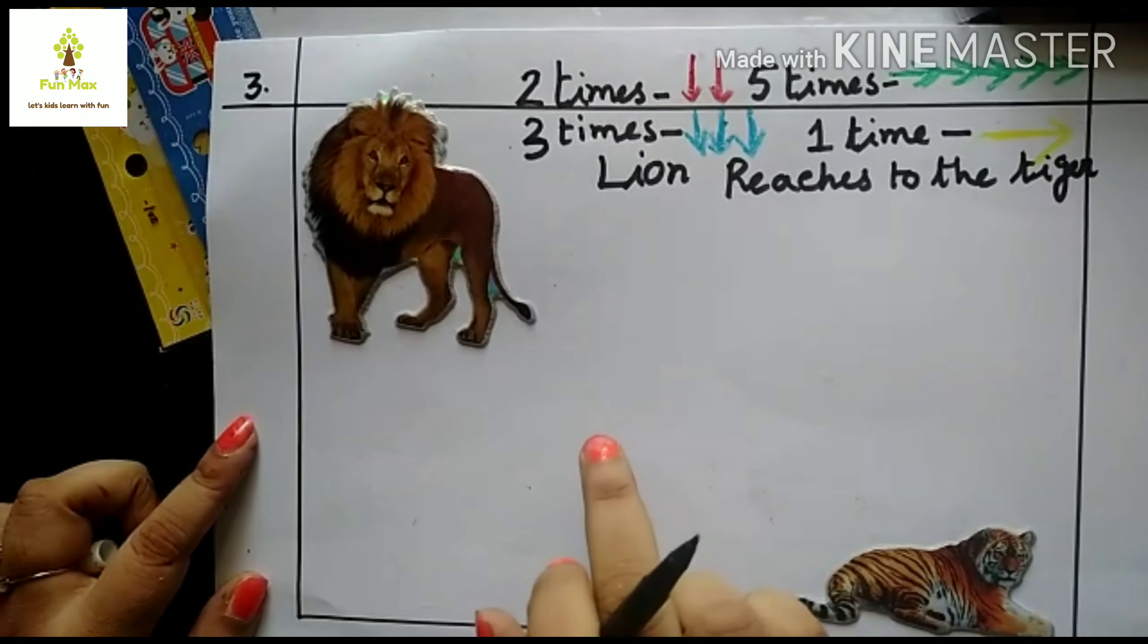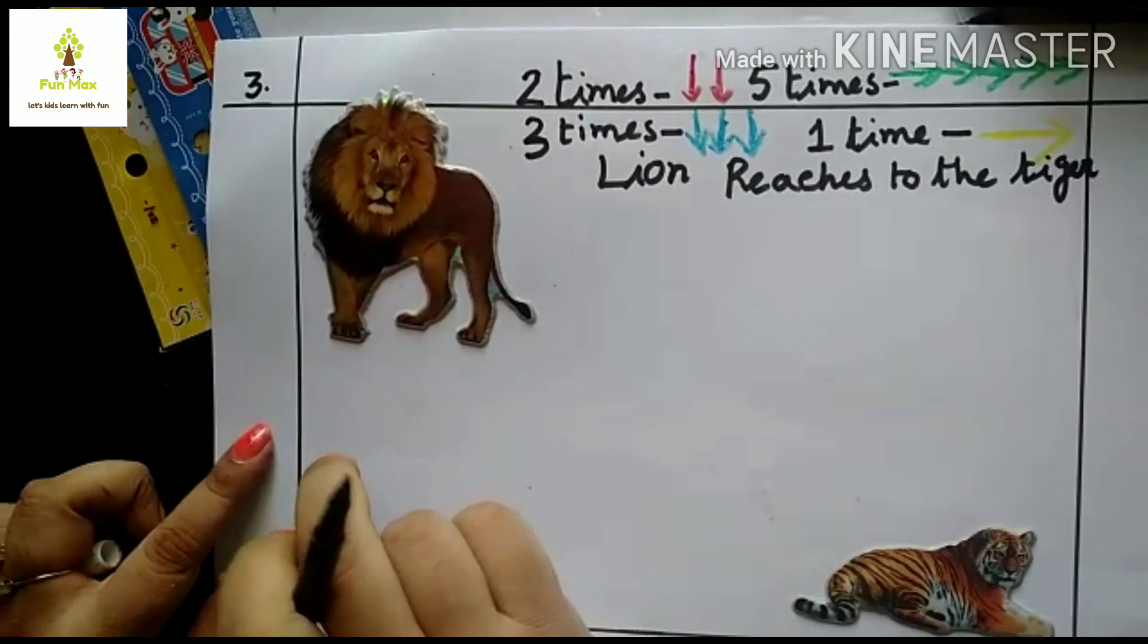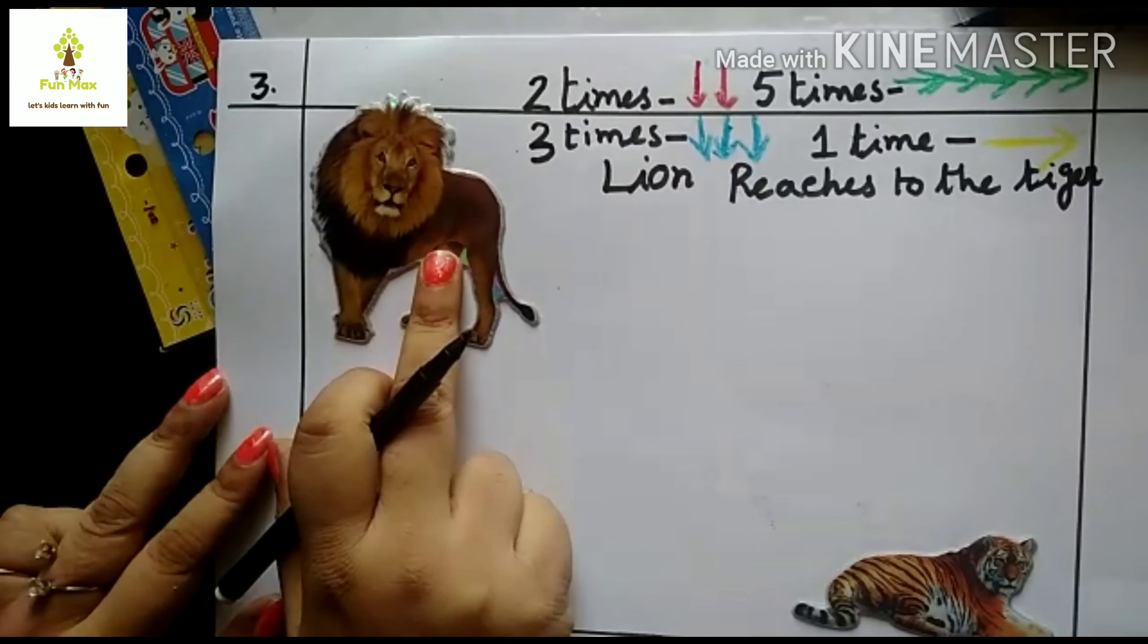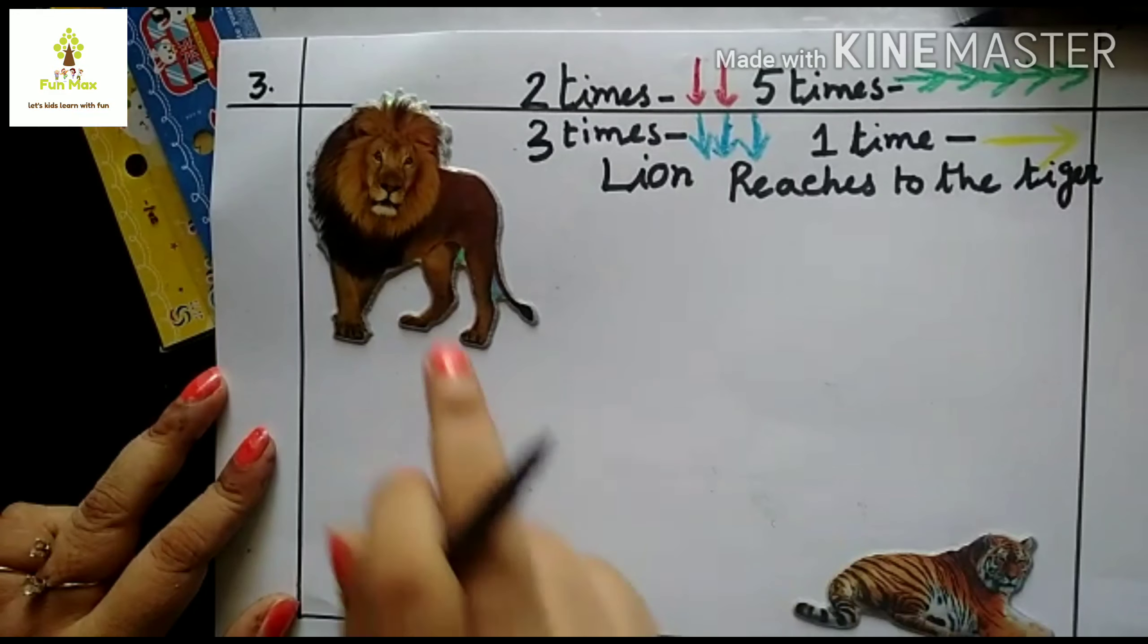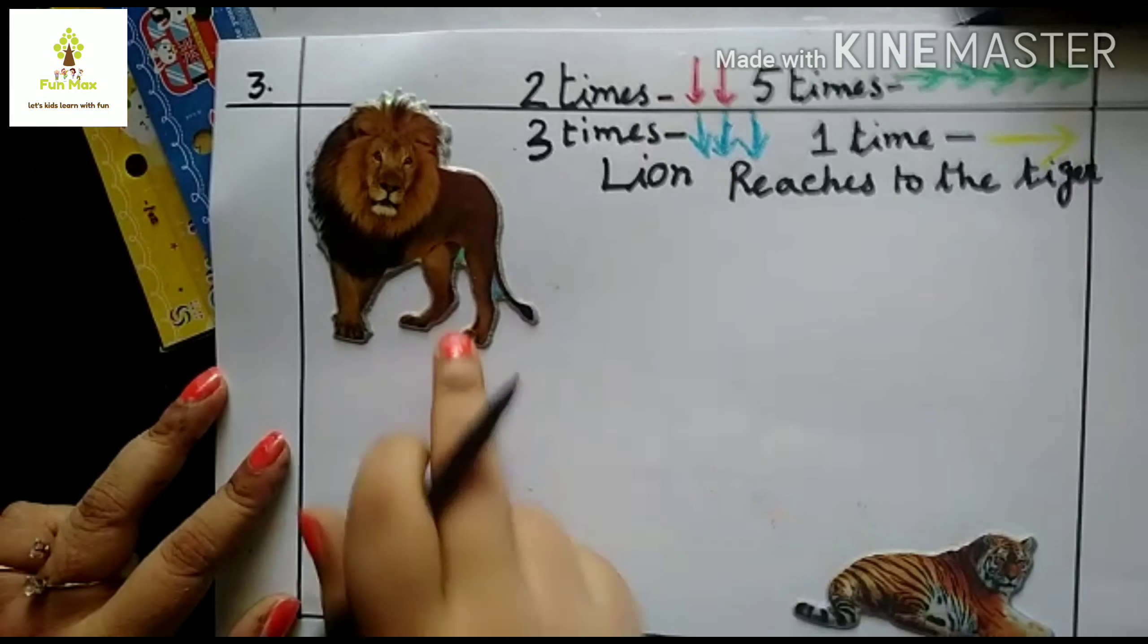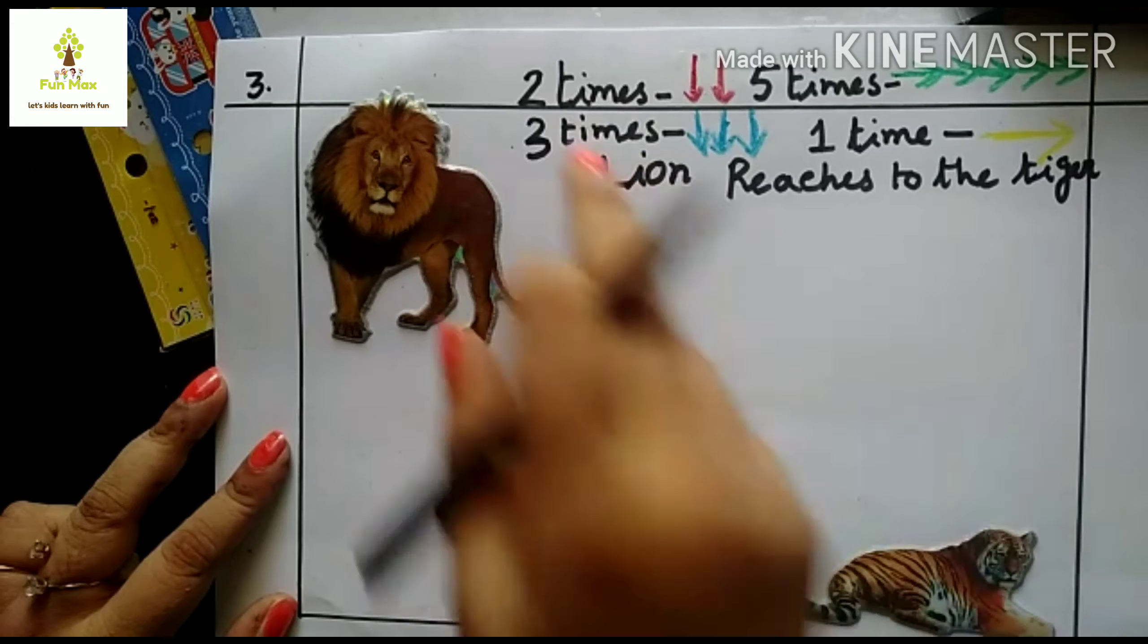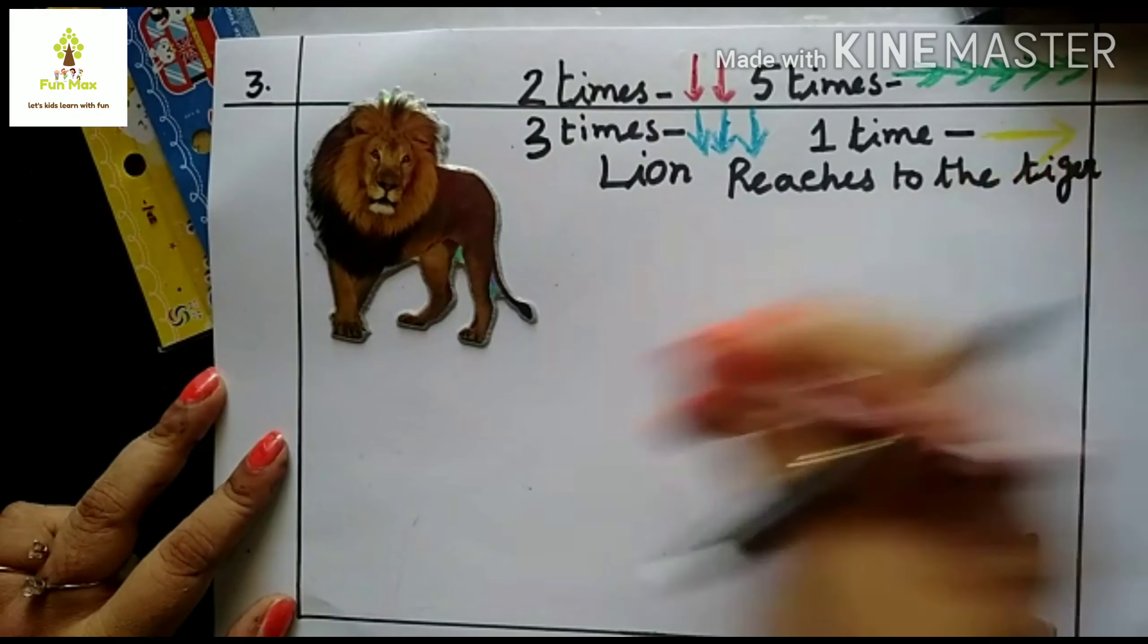Here guys, this is a very much fun activity. Here is a picture of lion and here tiger. Both are the friends. Lion has to reach to the tiger to make a friendship. Kids feel fun to do this. This lion has to friendship with the tiger. How will the lion reach to the tiger? By through particular directions. Here I write down two times red arrow, two times red arrow here.